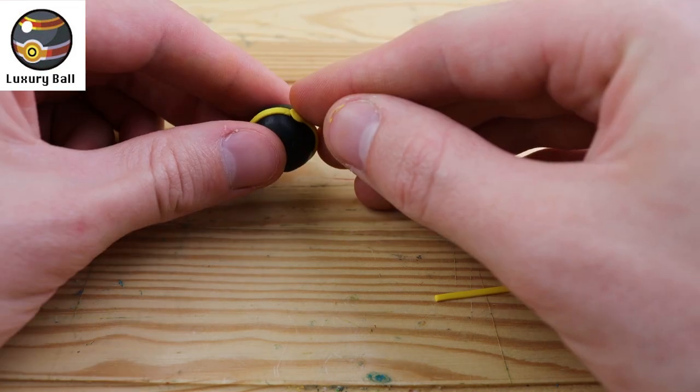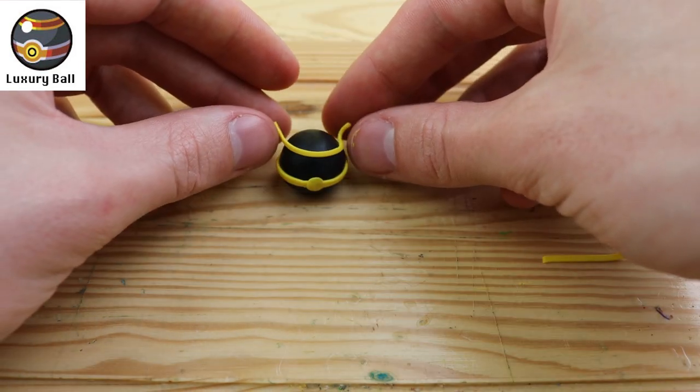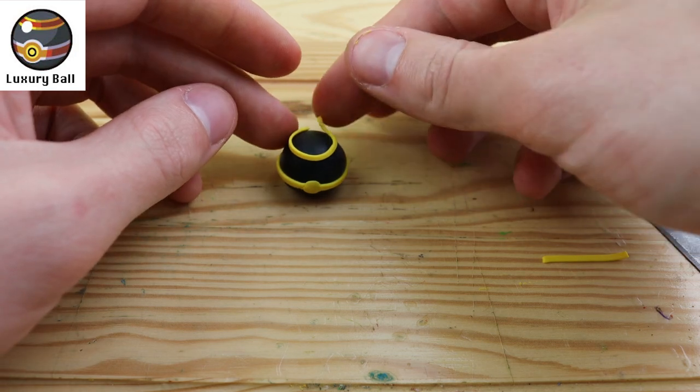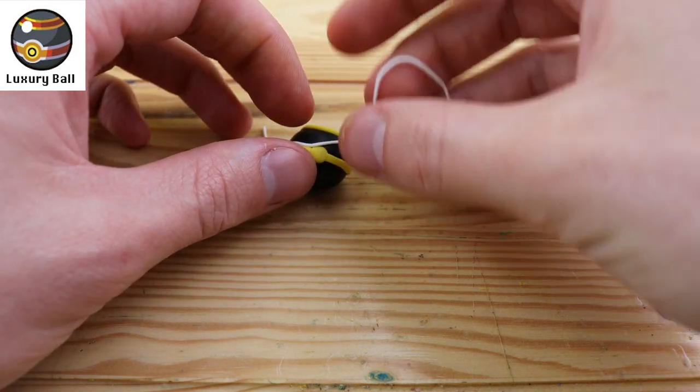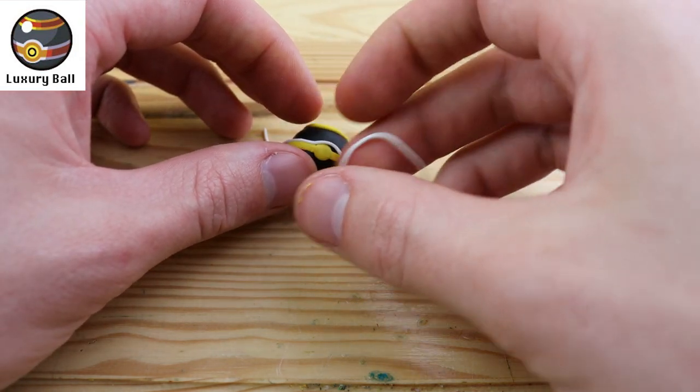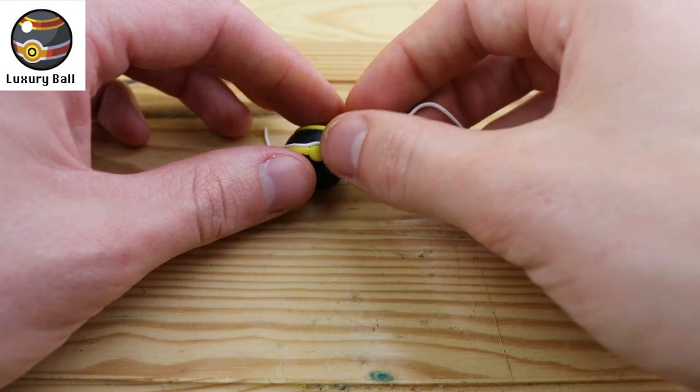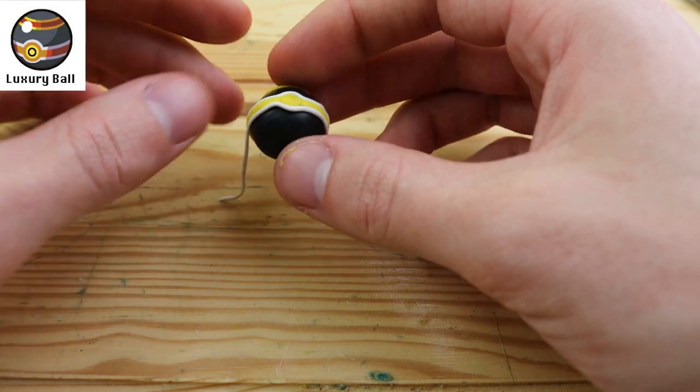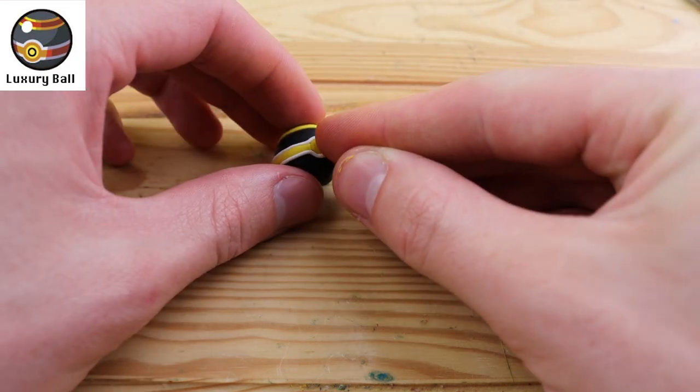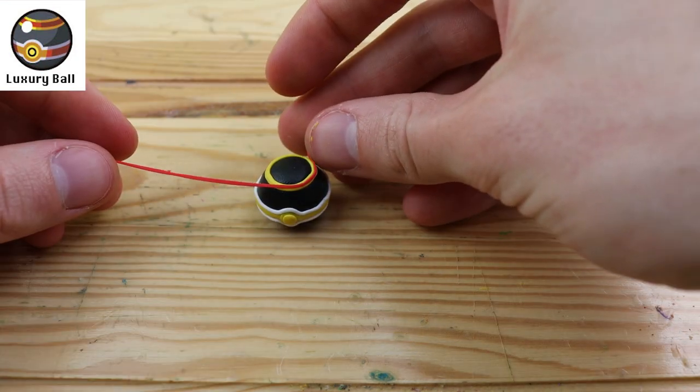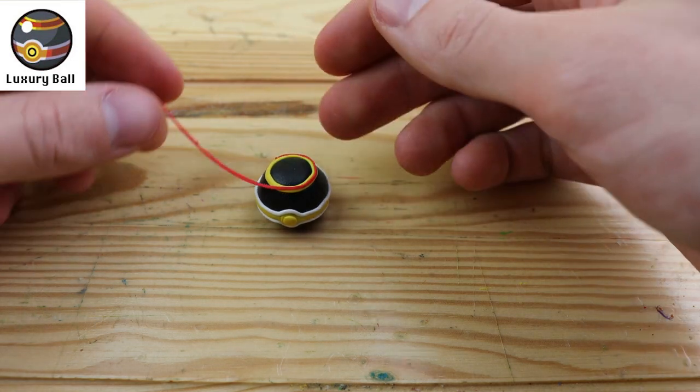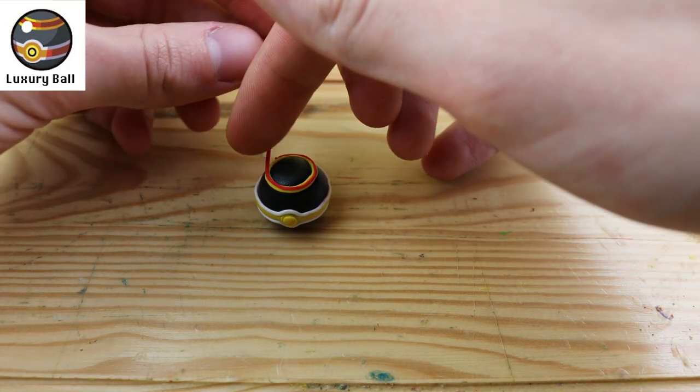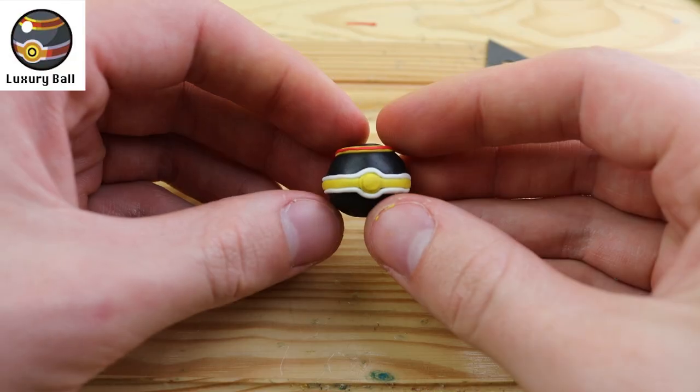And now for our final pokeball of the video, we have the luxury ball. This one is also one of my favorites in design. I think it's really cool and it looks like it would be very expensive. The special ability of this pokeball is that it doubles the rate in which the pokemon receive friendship, which is very similar to the friend ball except that one gives you immediate friendship. This one just doubles the rate that you can receive it.